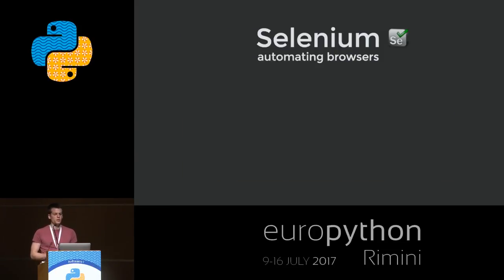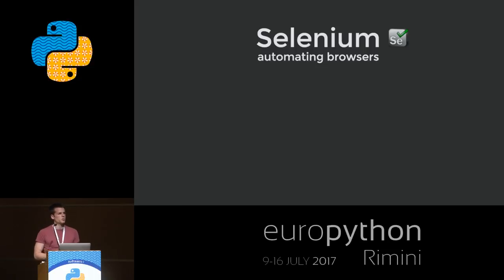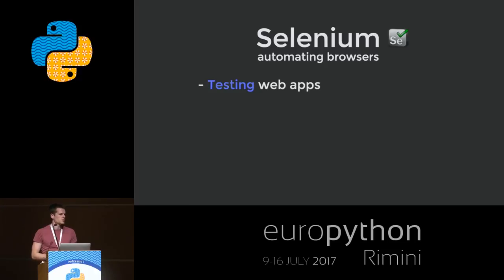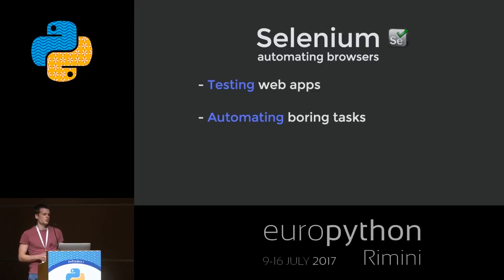For those who don't know, Selenium is actually a testing tool for frontends, especially web frontends. It's for testing your web apps — for example, you could test a Flask web app with it. But it's also very good for automating boring tasks, which of course includes liking stuff on Instagram if you want to do it efficiently.